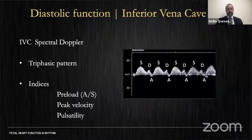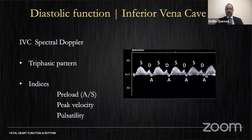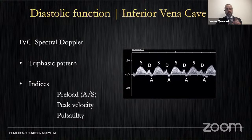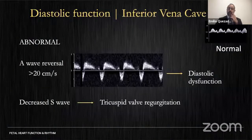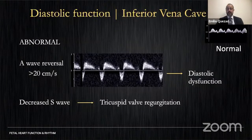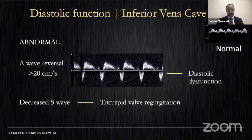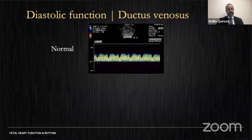Moving outside the heart, inferior vena cava (IVC) Doppler findings are similar to adults and children, showing a typical triphasic pattern: a systolic wave, a diastolic wave, and an A-wave with flow reversal during atrial contraction. Abnormal profiles include an A-wave reversal greater than 0.2 m/s indicating diastolic dysfunction, and a decreased S-wave suggesting tricuspid valve regurgitation.